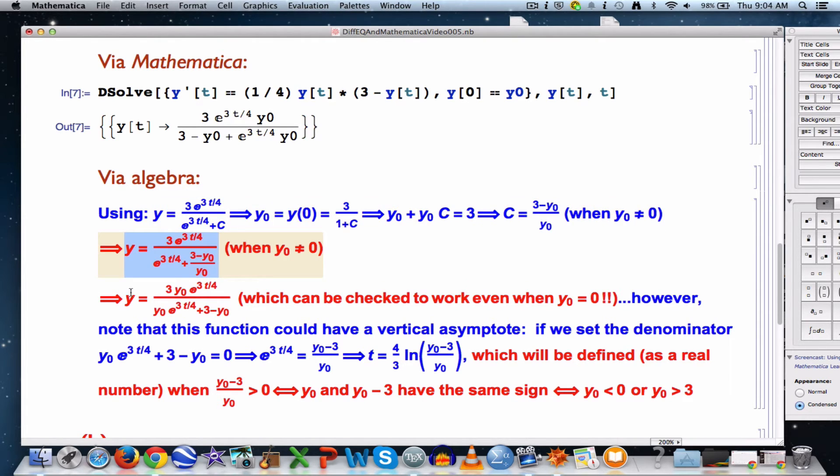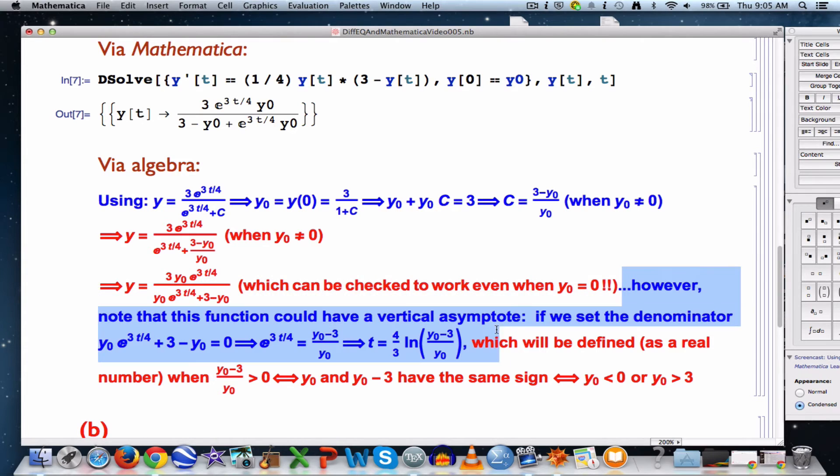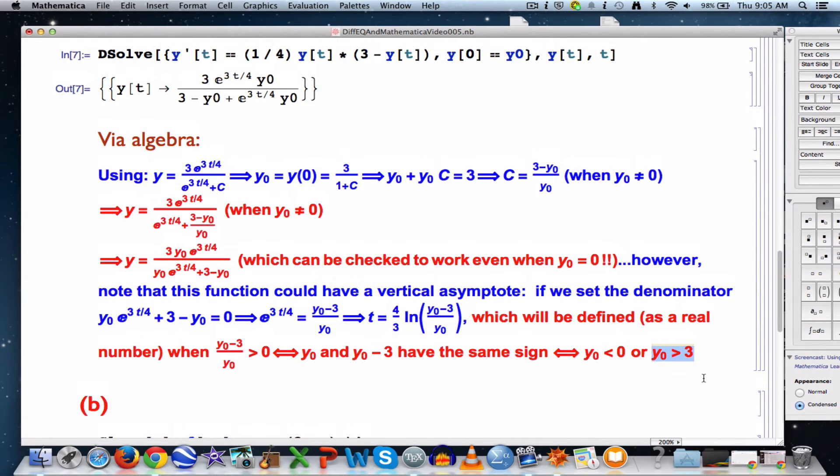However, when you plug it in for c and simplify, you get a function that does work no matter what y0 is. Even if y0 is 0, this works. In that case you would get the function y is always 0, the constant function whose graph is a horizontal line on the horizontal t-axis. However, this function could have a vertical asymptote, and it will be at t equals 4/3 natural log of (y0 - 3)/y0. That will be defined as a real number whenever that input is positive, which occurs if either y0 is less than 0 or greater than 3.